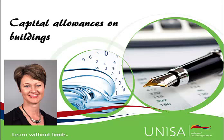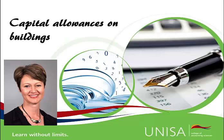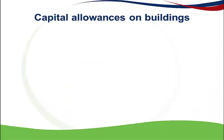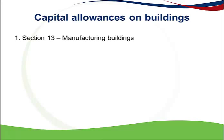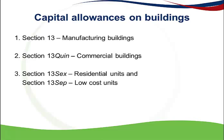This podcast is about the capital allowances that can be claimed on buildings. There are different types of buildings and therefore different capital allowances, such as manufacturing buildings, commercial buildings, residential units and low-cost housing, and lastly urban development zones.